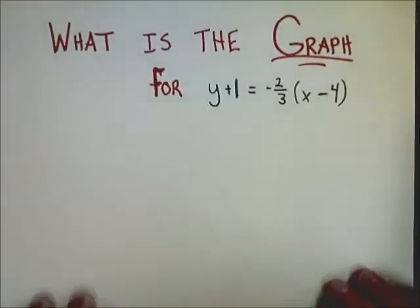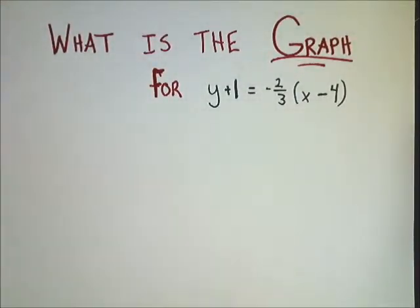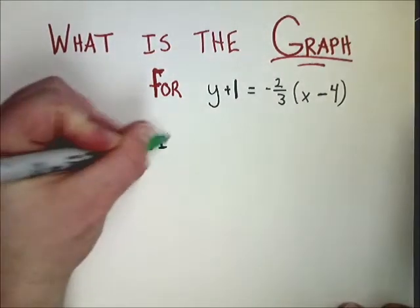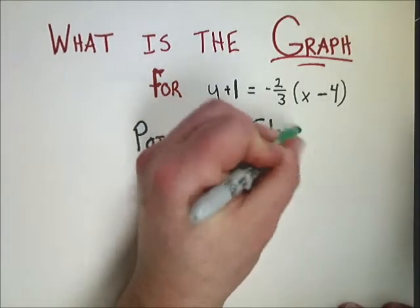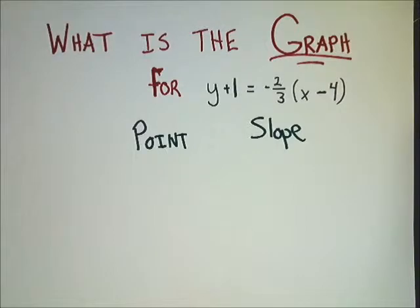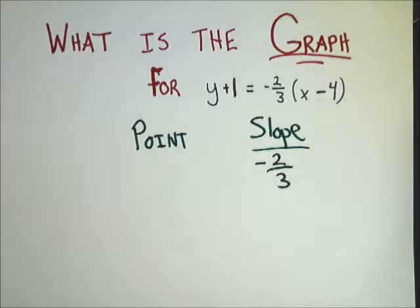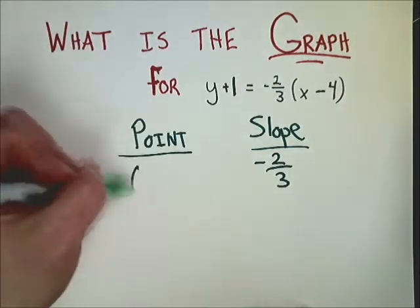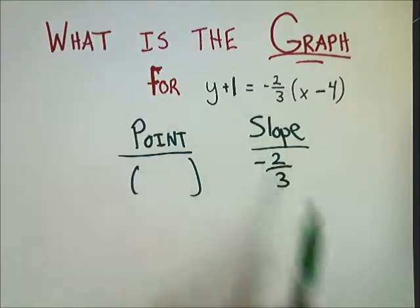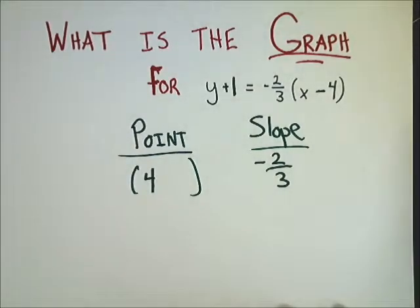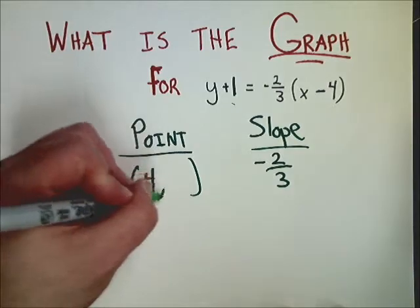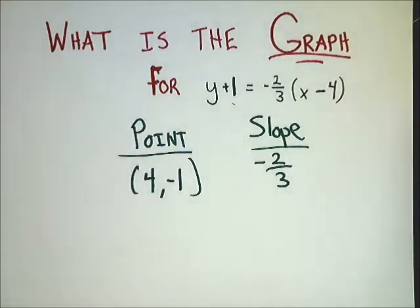Let's talk about how to draw a graph for these things. What is the graph for Y plus 1 equals negative 2 thirds times X minus 4? Now, this is point-slope form. So I can take that information and make a nice little graph for myself. I'm going to find the slope first and I'm just going to write down negative 2 over 3 because I don't need to change that. The other thing I need to do is find the point value. The X and Y comes directly from the problem. The X goes here. But remember, we have to change the sign. So instead of negative 4, it's plus 4. And the plus 1 becomes minus 1. Very simple.